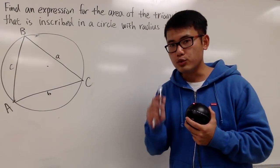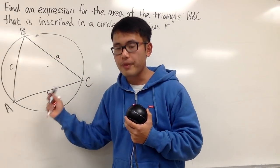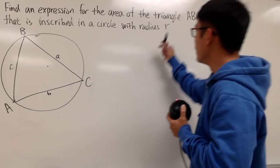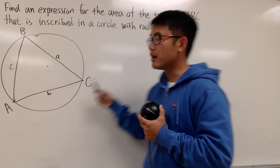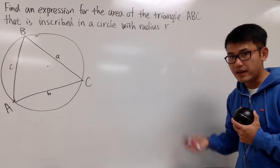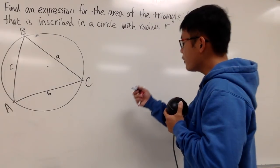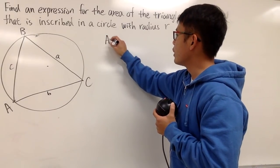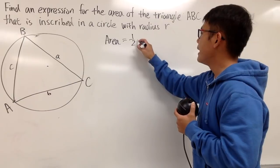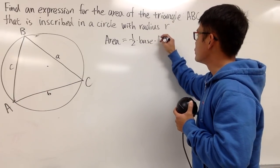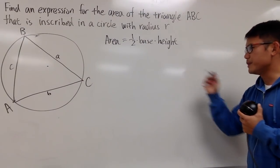Our goal is to write an expression for the area of this triangle, hopefully in terms of R and the angles A, B, and C, because those are the things that are given. Fundamentally, the area of a triangle is equal to one-half base times height, and everything is going to be based on that.